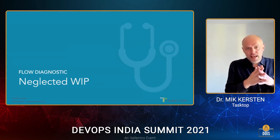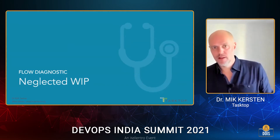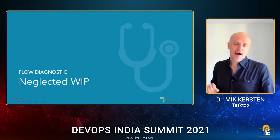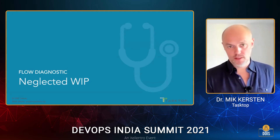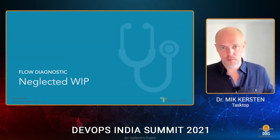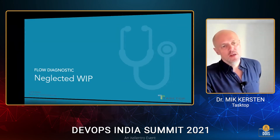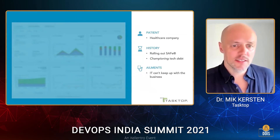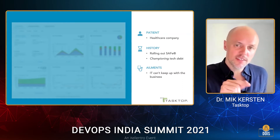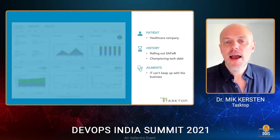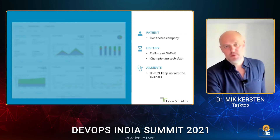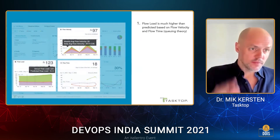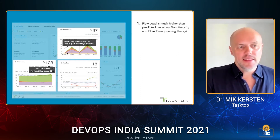Now let's switch to the next one. The tech debt death spiral is one of the most concerning diagnostics that we see, but neglected WIP is actually the most common one we see across all deployments of the Flow Framework over the past few years. In this case, the patient is a healthcare company, doing agile at scale. Interestingly, as you'll see from these flow diagnostics, they've actually been championing tech debt — great to see. However, the ailment is that they can't keep up with the business.